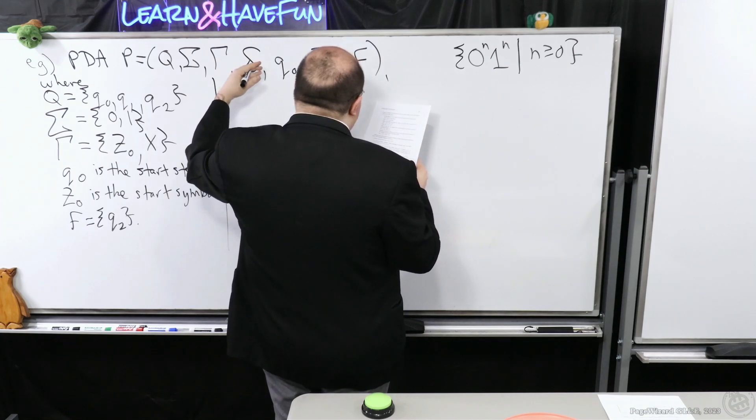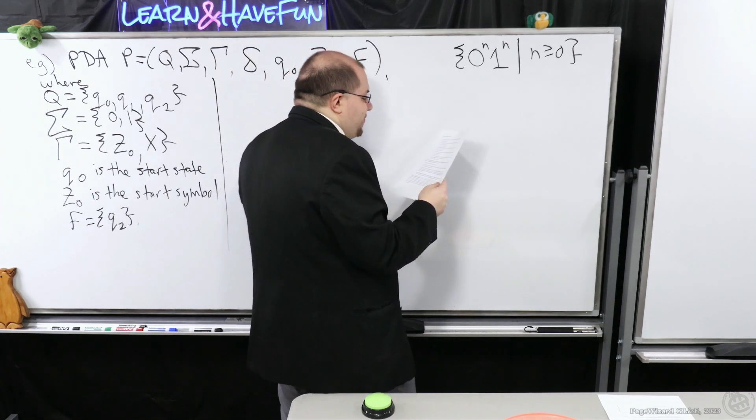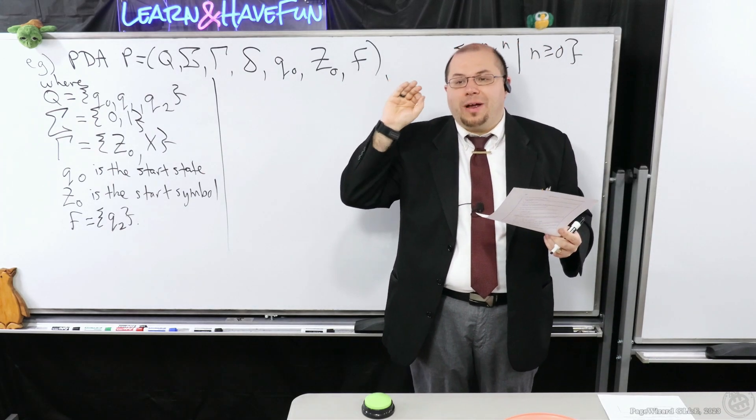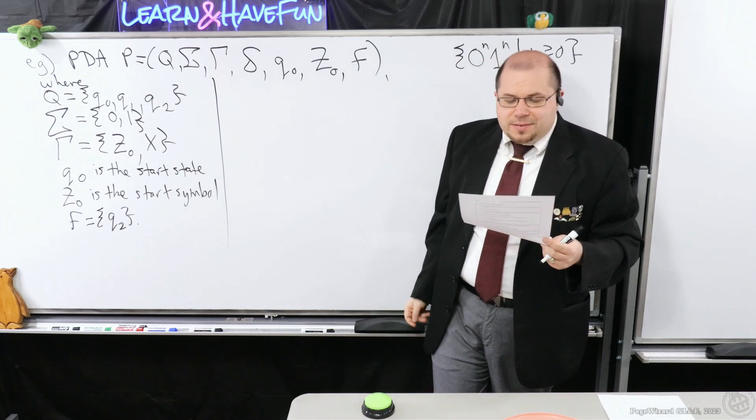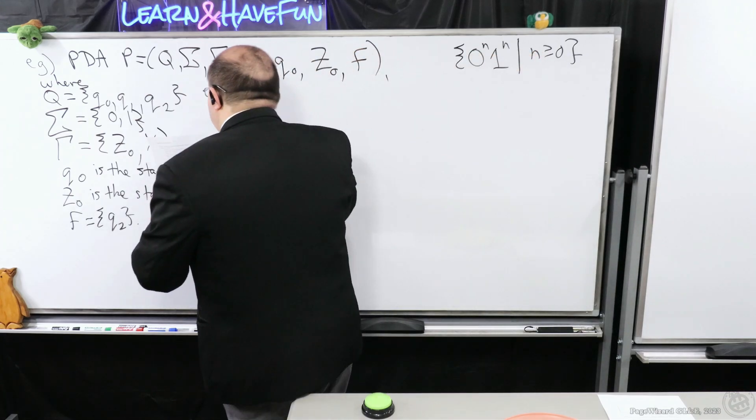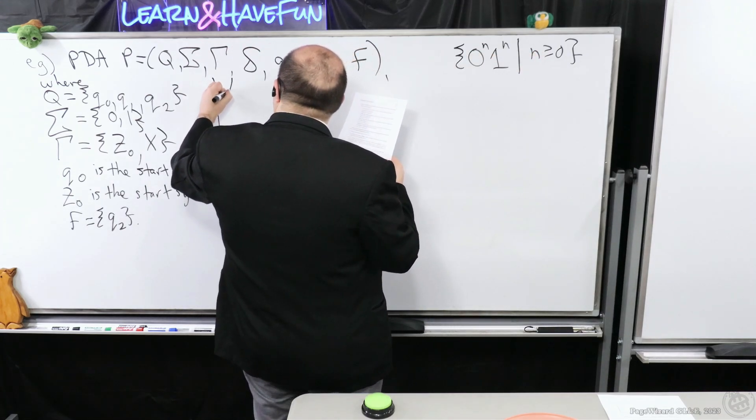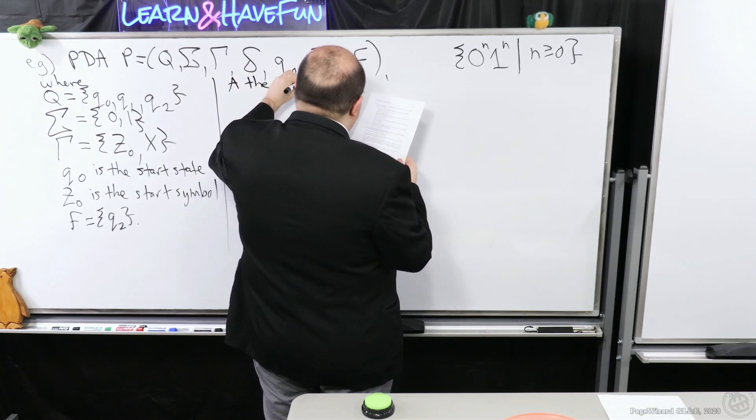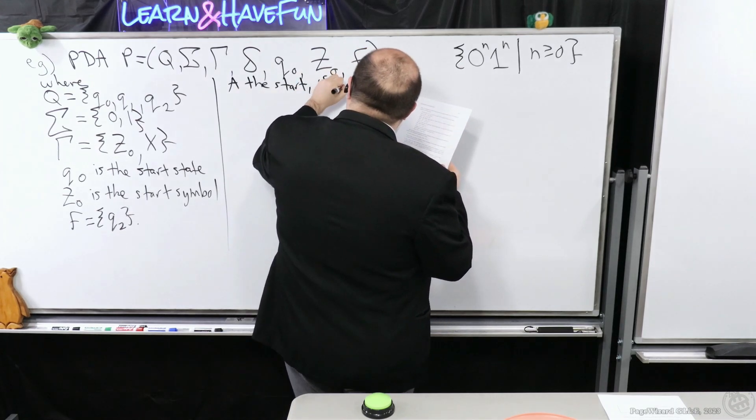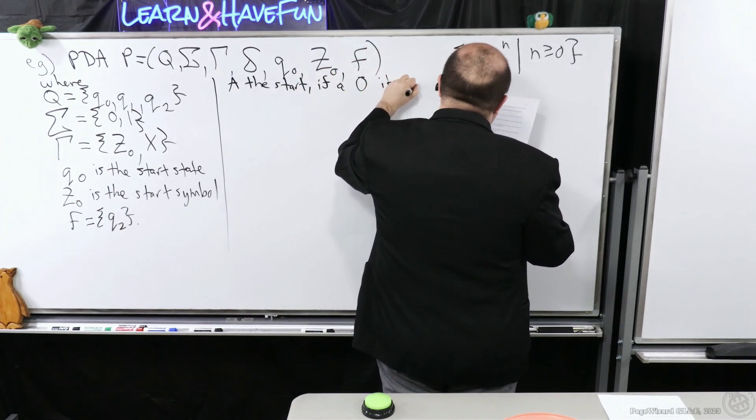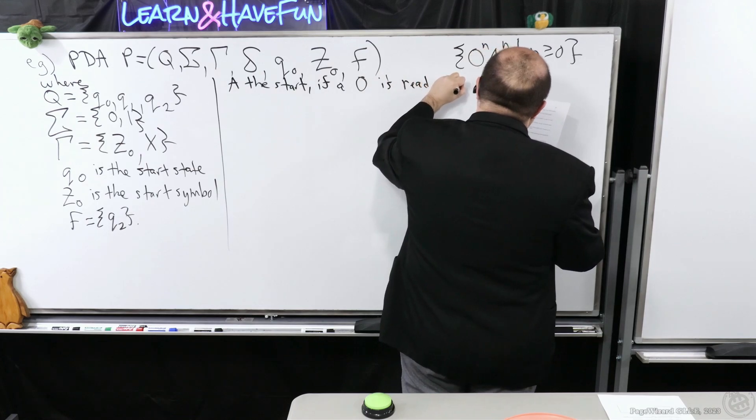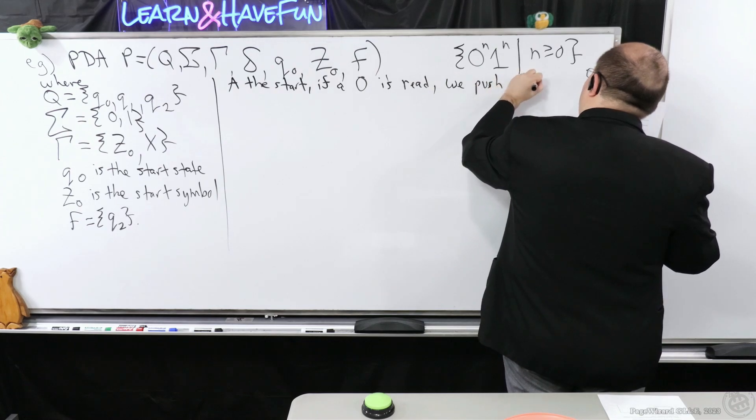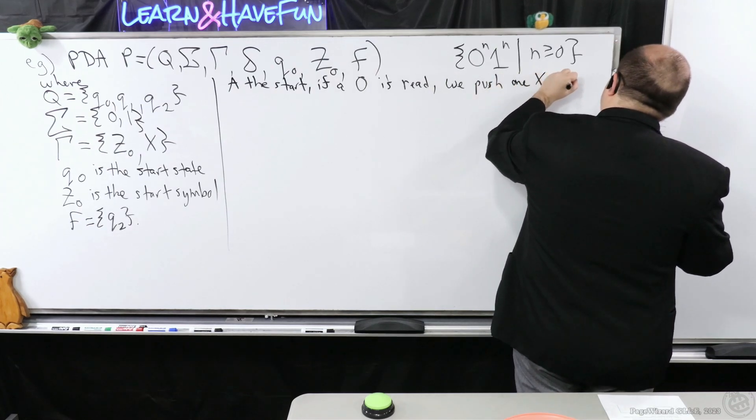So this is going to be what we call a generalized transition diagram, because we also have to encapsulate the behavior of the stack. Next, we're going to talk about what delta is. So I'm going to break it down in terms of the phases that we had. So at the start, if a zero is read, we push 1x onto the stack.